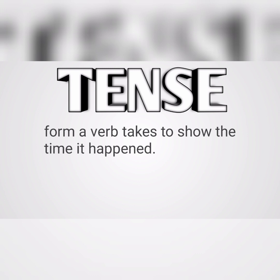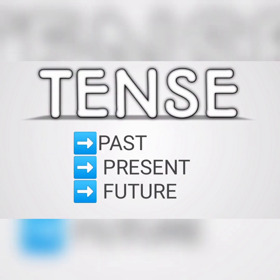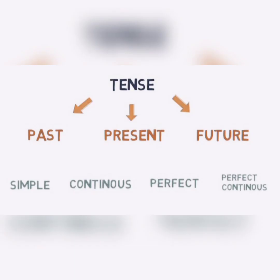The main tenses found in many languages include the past, present, and future. Tenses are divided into three — past, present, and future. Each of these types has four subdivisions: simple, continuous, perfect, and perfect continuous.